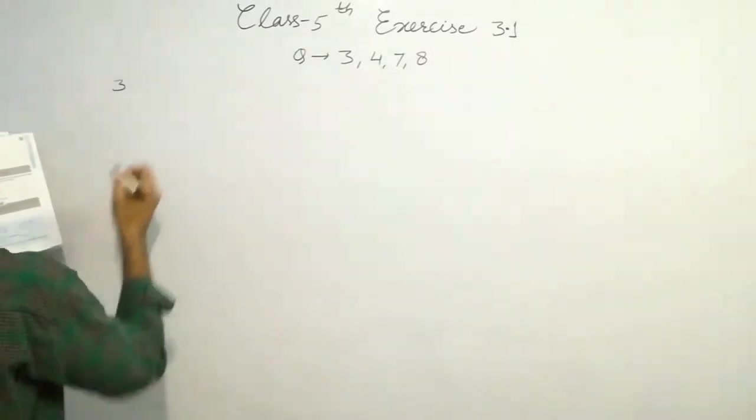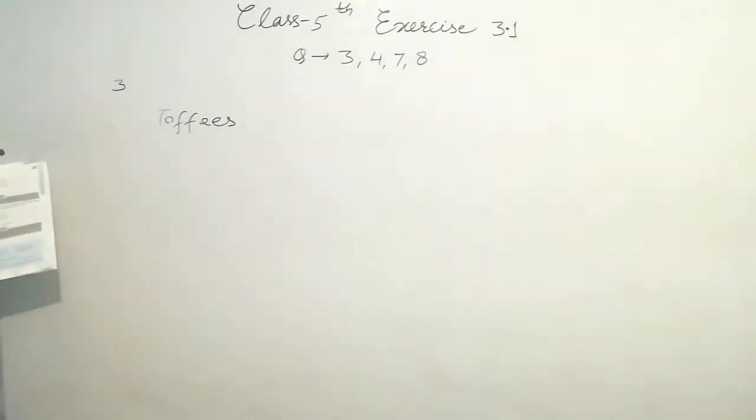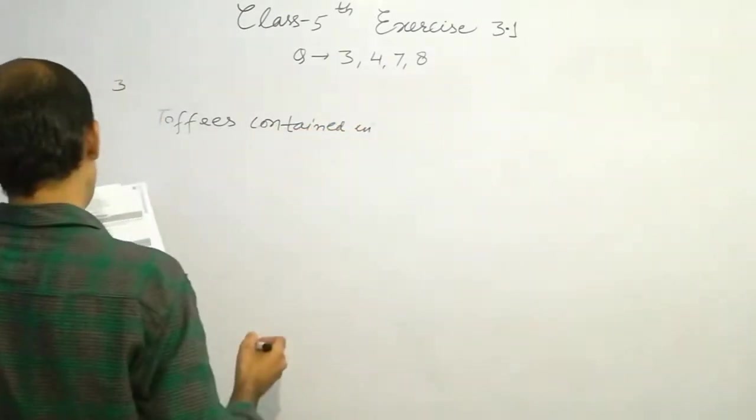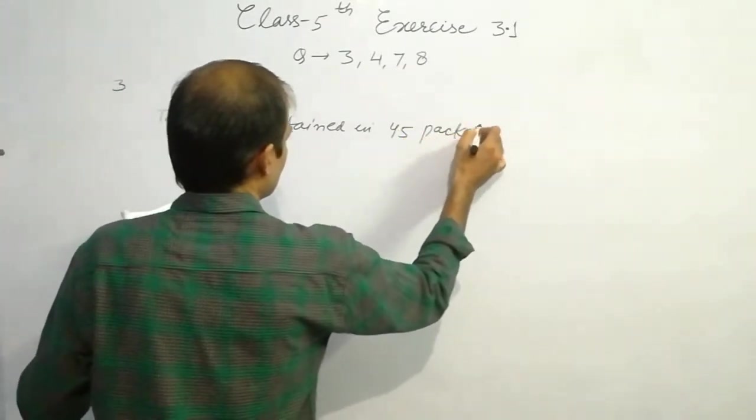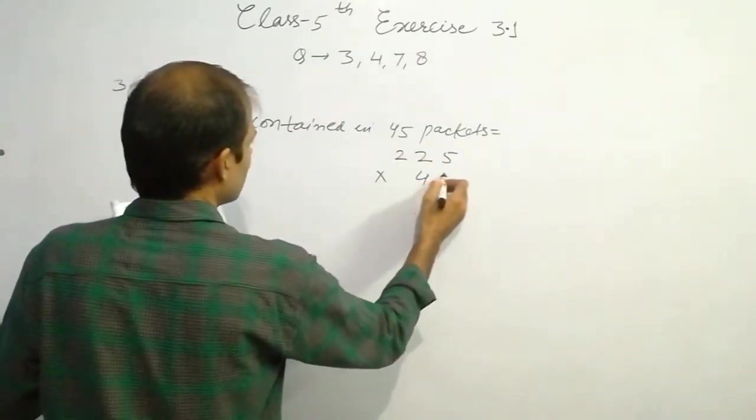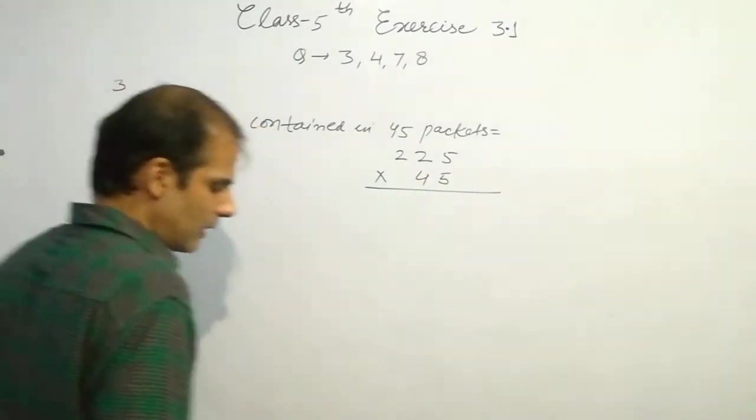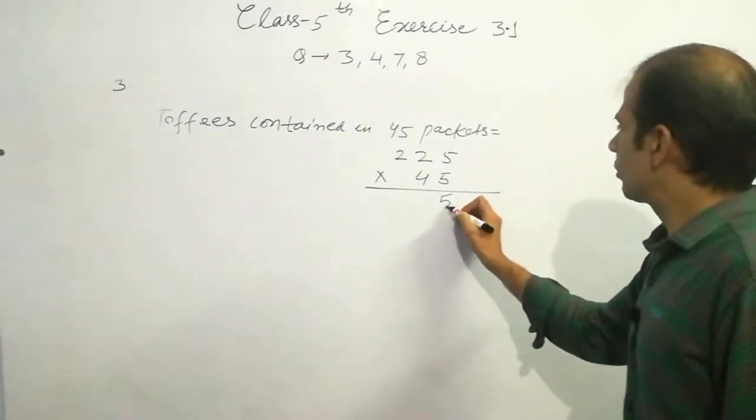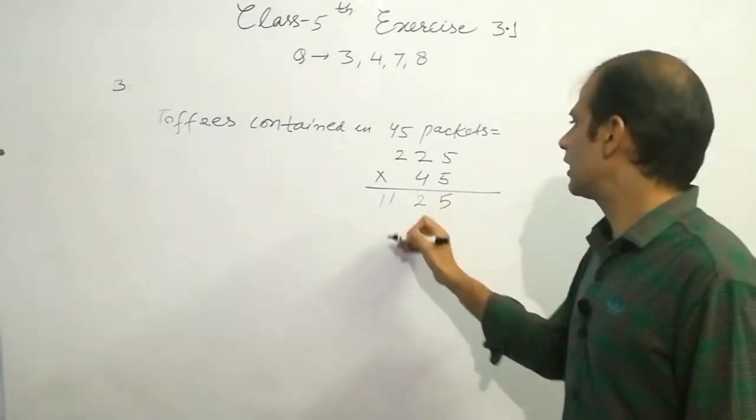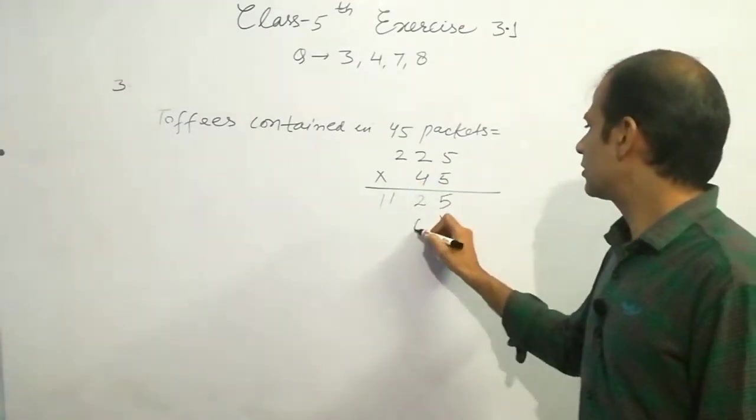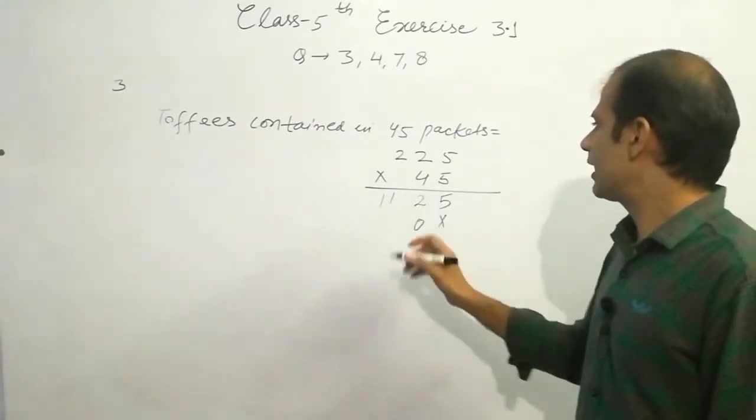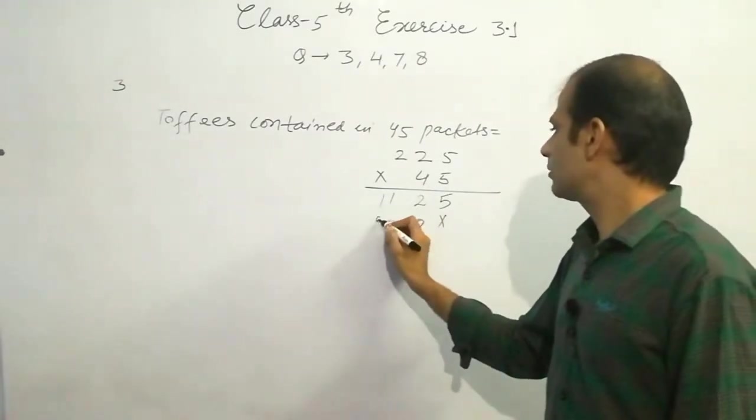So we will write toffees contained in 45 packets. That's equal, now multiply 225 into 45. Simply multiply this. 5 fives are 25, 2 carry. 5 twos are 10 plus 2, 11 and 1, 11. Now put a cross sign. 4 fives are 20, 0 carry. 4 twos are 8. 4 fives are 20, 2 carry. 4 twos are 8 plus 2, 10, 1 carry. 4 twos are 8 plus 1, 9.